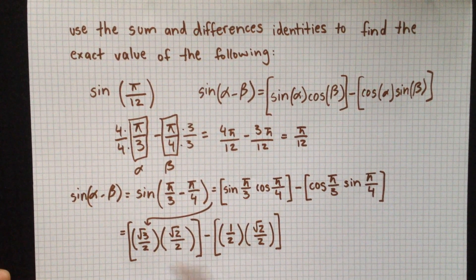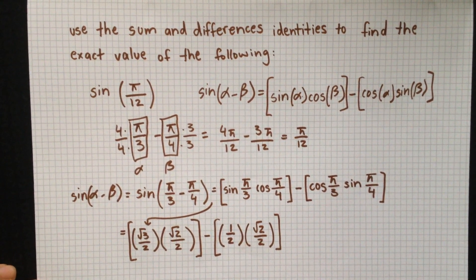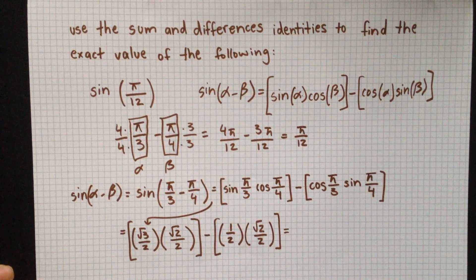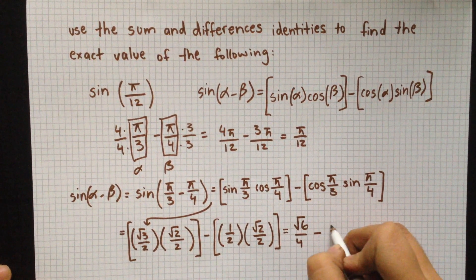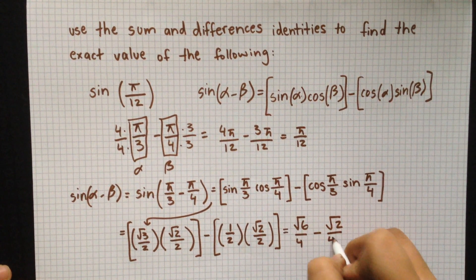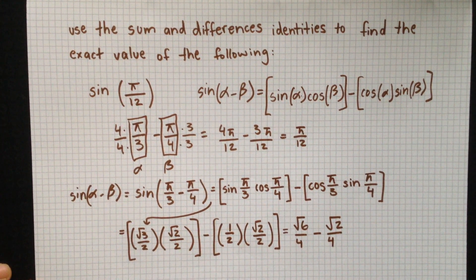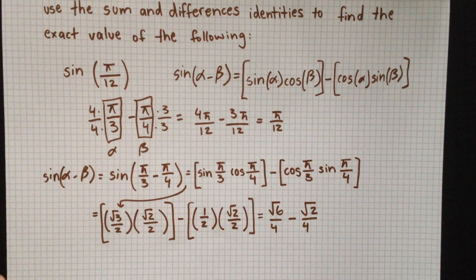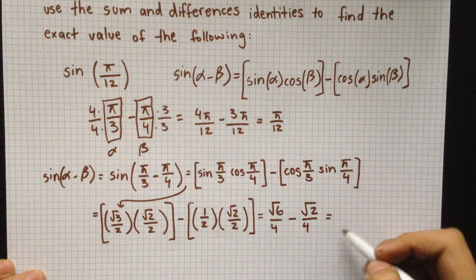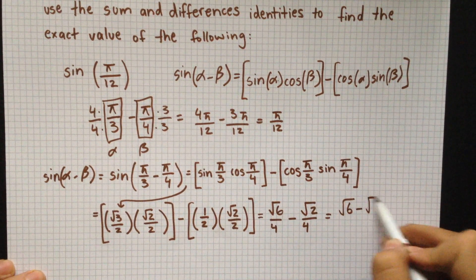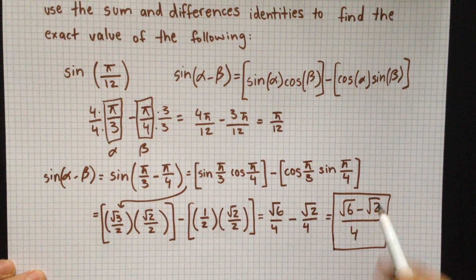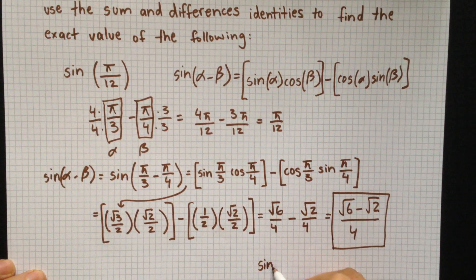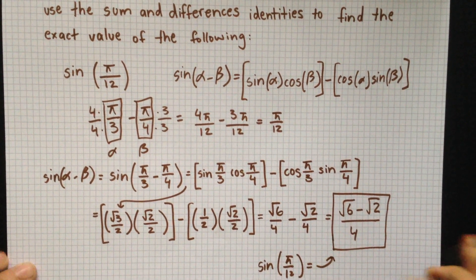Multiplying these values together, we get radical 6 over 4 minus radical 2 over 4. Combining these, our final answer is radical 6 minus radical 2, all over 4. This is the exact value of sine of pi over 12.